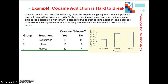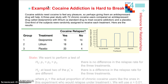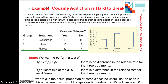We have a bar graph to make a comparison between the three treatments. Remember, it's a proportion or percentage of how many relapsed so that we can make a fair comparison — it doesn't matter what the raw number was, it matters what the proportion was. We state our hypotheses: the null says the proportions are all equal, meaning no difference in the relapse rate for the three treatments.